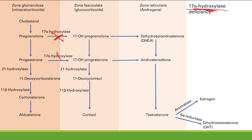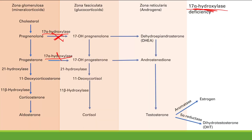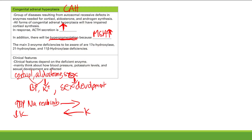To summarize: know the steroid synthesis skeleton — 17-alpha-hydroxylase moves production from mineralocorticoids to glucocorticoids to sex hormones, while 21-hydroxylase and 11-beta-hydroxylase allow maturation of aldosterone and cortisol. For each enzyme deficiency, think about how cortisol, aldosterone, and sex hormones change, and how those changes affect blood pressure, potassium, and sexual development.